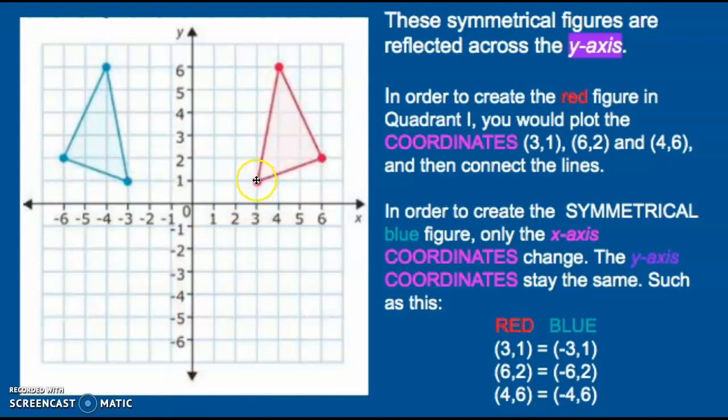(3,1), where this point is here, would be (-3,1). So as you can see, the x-axis coordinate in the first position changes, but the height, the y-axis coordinate, remains the same.